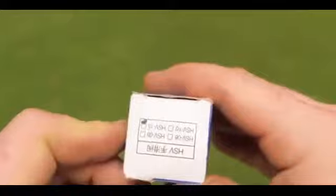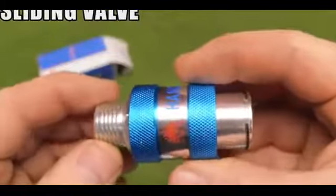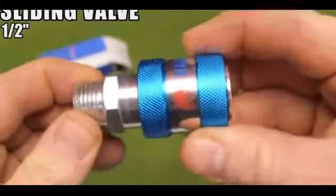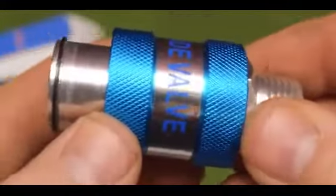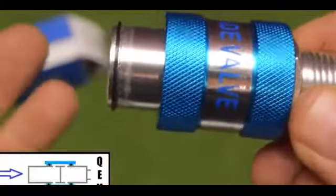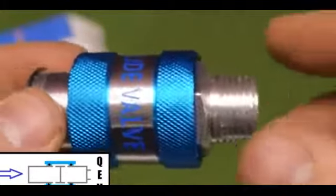From eBay I bought this sliding valve. This valve is very interesting. Inside the blue parts there are two o-rings that slide on the valve itself. Let's see how it works. When it is in this position it works like a simple tube. The air comes from the left and goes out from the right.